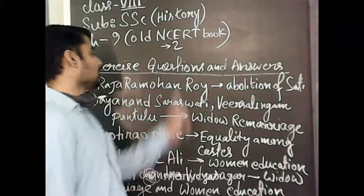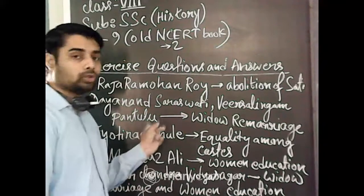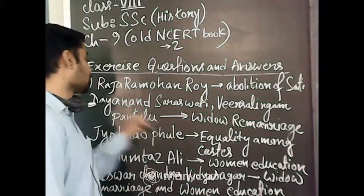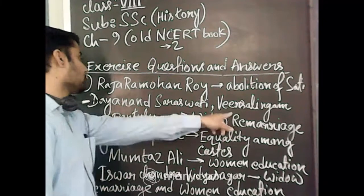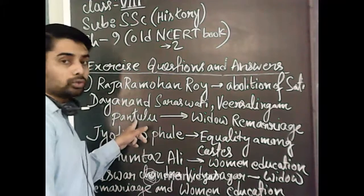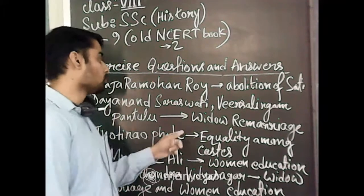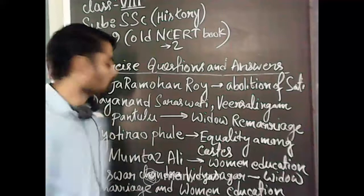Number 2, Dayanand Saraswati and Virsalingam Pantulu from South India Madras. Dayanand from Punjab and Virsalingam Pantulu from Madras supported widow remarriage.